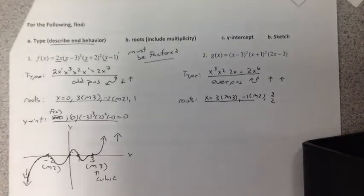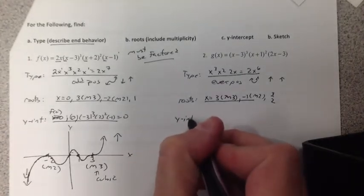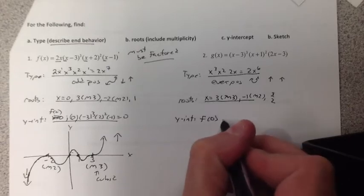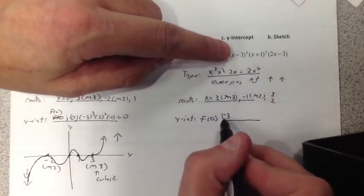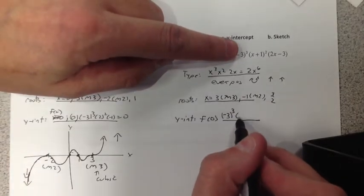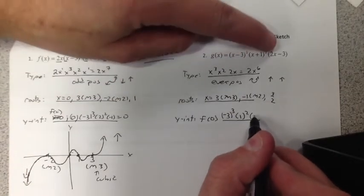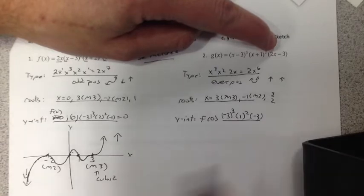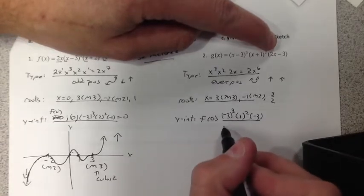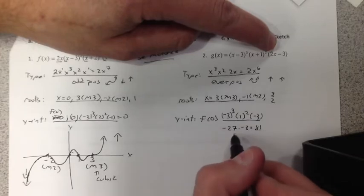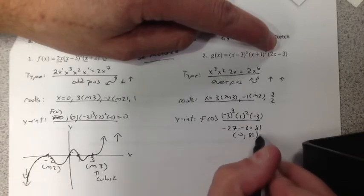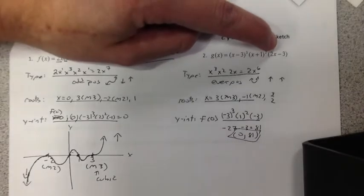Now we have to get the y-intercept. Let x be 0. Negative 3 cubed, 1 squared, negative 3. Nasty. That's just basically negative 27 times negative 3, which is 81. So 0, 81 is our y-intercept.